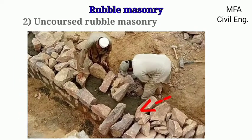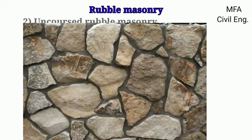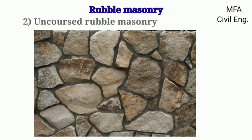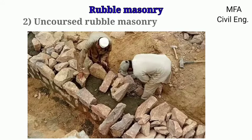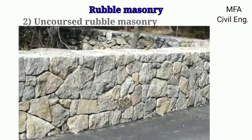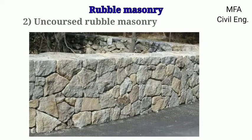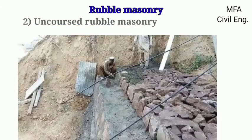Through stones are also provided at intervals to interlock the portion between the facing and the backing, which increases the strength of the masonry. This type of masonry affords a very rough appearance. If the wall is greater than half a meter in thickness, a line of header or through stones overlap each other by at least 15 cm. This type of masonry is used for constructing compound walls, boundary walls, plinth walls, and retaining walls.